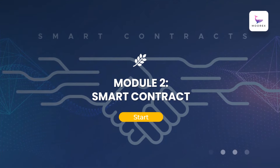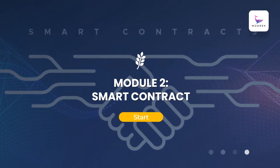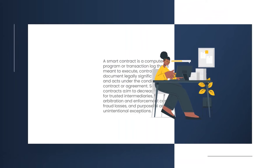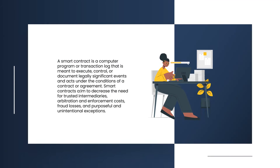Module 2: Smart Contract. A smart contract is a computer program or transaction log that is meant to execute, control, or document legally significant events and acts under the conditions of a contract or agreement. Smart contracts aim to decrease the need for trusted intermediaries, arbitration and enforcement costs, fraud losses, and purposeful and unintentional exceptions.